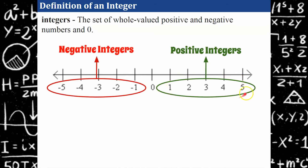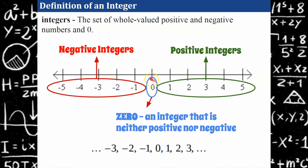We have a set of numbers here. 1 through 5 are positive integers. Then we have the set on the left that are all our negative integers. So there are different types of integers. These are positive integers, these are negative integers. Then we have one other integer: 0. Zero is an integer and it's neither positive nor negative. It has no sign to it. Think of it somewhat as neutral — if you have nothing, it can't be positive and it can't be negative.